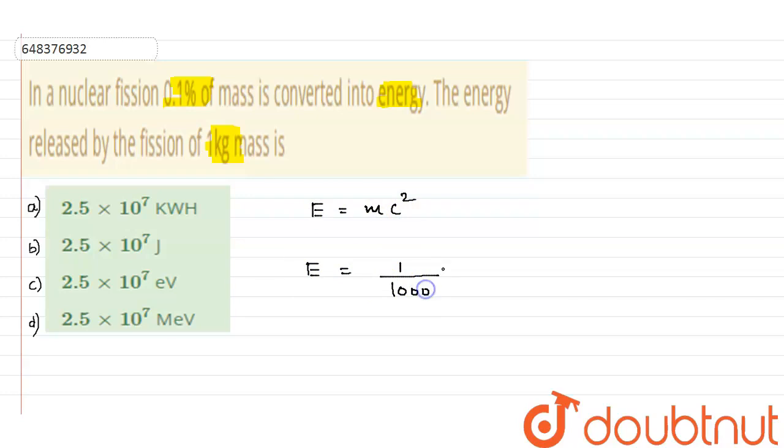So that's 0.1 into 1 kg, that is my m, into c, that is 3 times 10 to the power 8 squared. So the energy, if you calculate it on solving, you will get this.